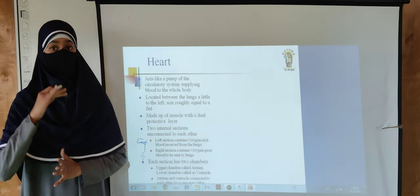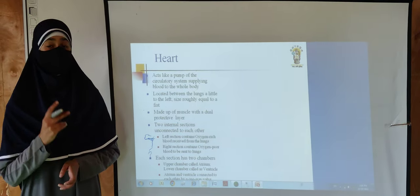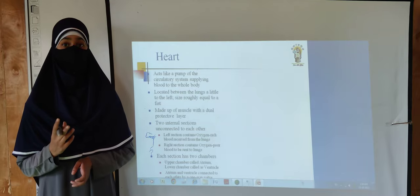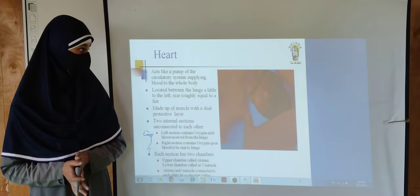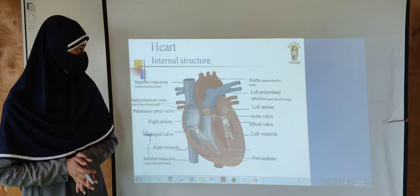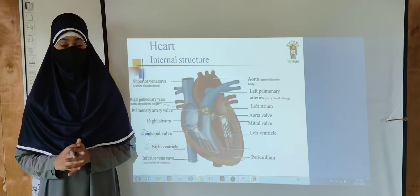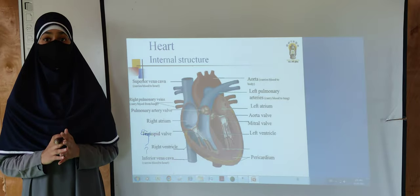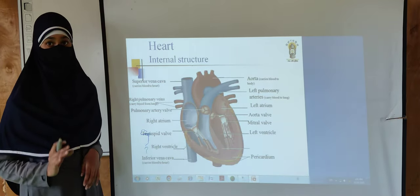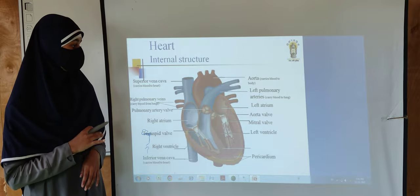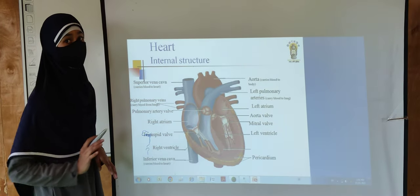The upper two chambers are called the atria — each one is called an atrium — and the lower two chambers are called the ventricles. The human heart consists of four chambers in total: the upper two are the atria and the lower two are the ventricles.